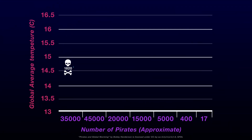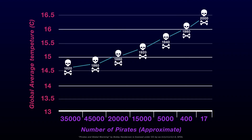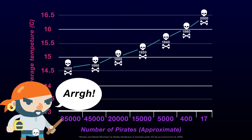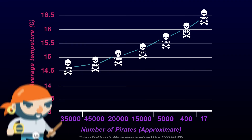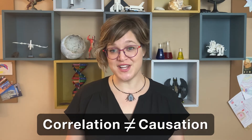Interpreting graphs does require a bit of caution. Looking at this graph, we see that as the number of pirates decreases, global temperature increases. Does this mean that by increasing the number of pirates, we could impact climate change? Sadly, no. Just because two things seem to relate does not mean that we can infer that one caused the other. In technical terms, correlation does not equal causation. To figure this out, we would have to create an experiment where these were the only two variables.